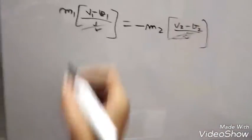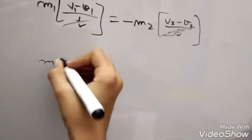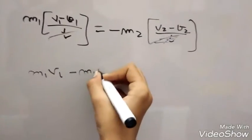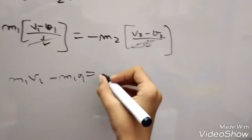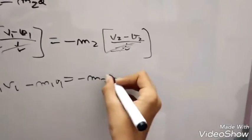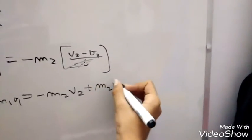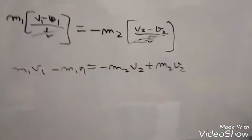Here it is m1v1 minus m1u1 equals minus m2v2 plus m2u2. We will take the initial part here and the final part there.